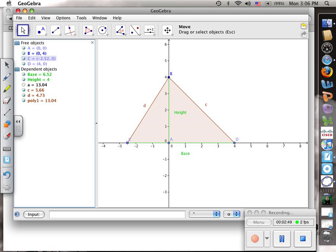Let's check it. We can move our objects along here, and as we do so, we can see that a and poly one stay the same. So our formula for the area of a triangle is correct.